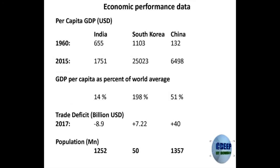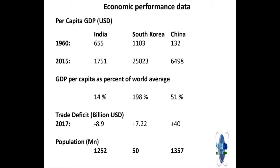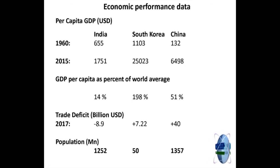Now quickly on economic performance data: in 1960, India's per capita GDP was 655 US dollars, while China was 132 and Korea was 1,100 — not significantly different. In the 1940s they were probably behind us. By 2015, we have grown only to 1,750 US dollars per capita, while China has grown to 6,000. Korea is unbelievable — 25,000 US dollars per capita GDP from 1,100 US dollars.